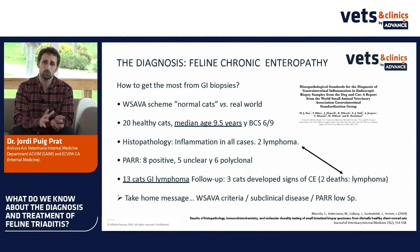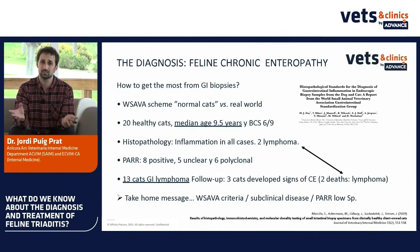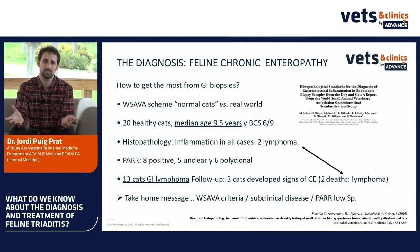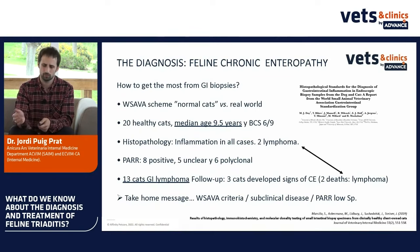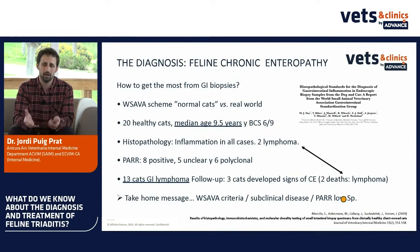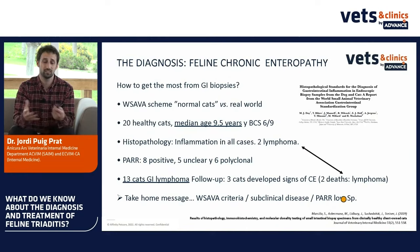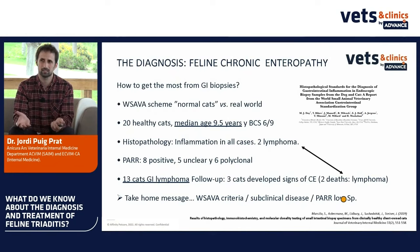Maybe we have cats with subclinical disease as we saw with pancreatitis, and we have to understand that this may be a normal aging process. Also, PARR sometimes has low specificity — a positive PARR doesn't always mean a tumor is present. We've seen this in leishmaniosis in dogs with positive PARR results. So be careful with interpreting PARR alone.